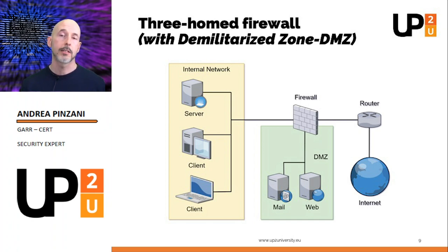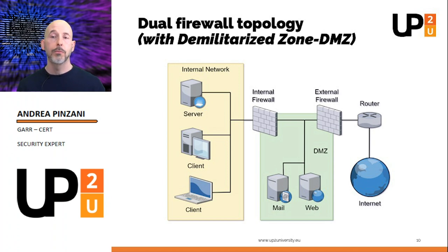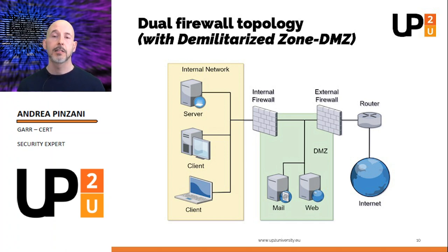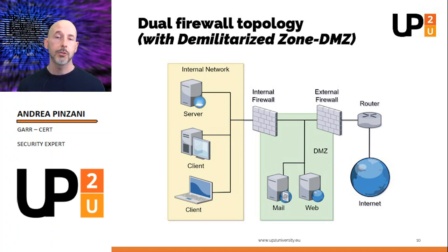If an attacker compromises one of these servers, they will still not have direct access to the protected networks. The use of two firewalls still allows the organization to offer services to internet users but provides an added layer of protection. Basic firewall models often have a 3-interface limit. High-end firewalls allow a large number of physical and virtual interfaces, added through the use of VLANs. With a greater number of interfaces, you can implement many different security zones on your network.